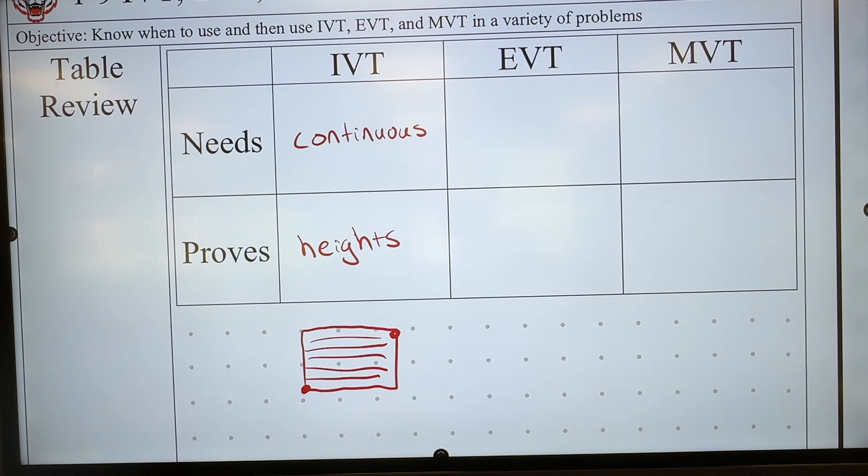Alden is up. EVT, what do we need? Continuous and closed. Continuous and closed. I'm just going to say closed because there's really only one thing that that means. Closed interval. And what does it prove?